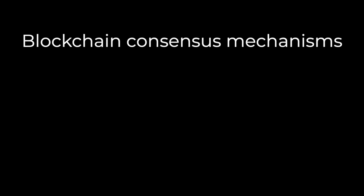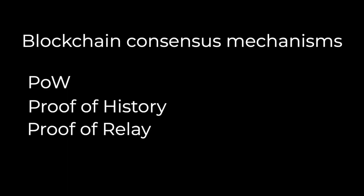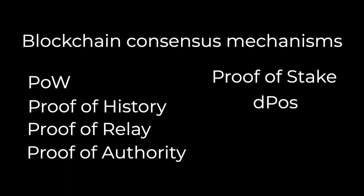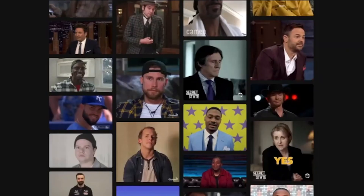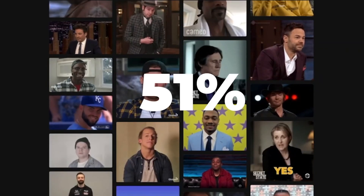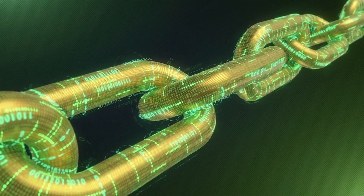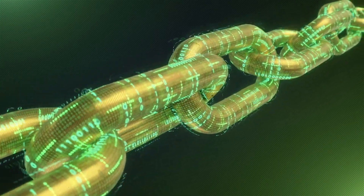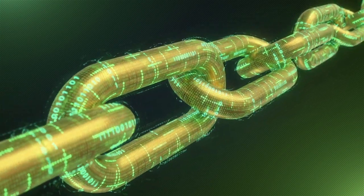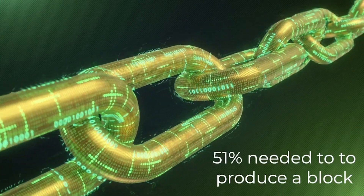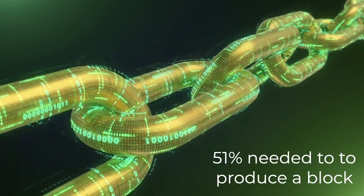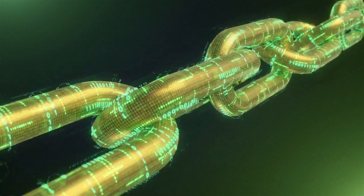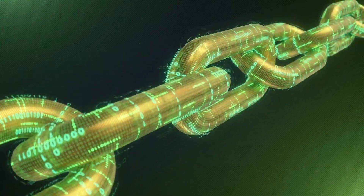Just to name a few key consensus mechanisms: there's proof of work — Bitcoin is proof of work — proof of history, proof of relay, proof of authority, proof of stake, and delegated proof of stake. On many chains, 51% consensus is required to produce a block. So if nodes are voting about the state of the chain, 51% consensus must be achieved to seal off the link and confirm the accurate state of the chain.